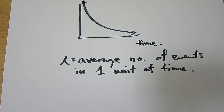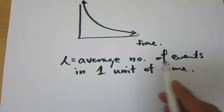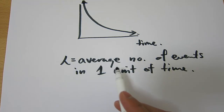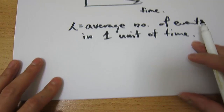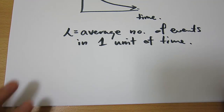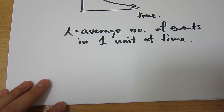What do we mean by one unit of time? If they're talking about minutes, then it's the average number of events in one minute. If they're talking about hours, then it's the average number of events in one hour. We'll go through a worked question, so this will become clearer.